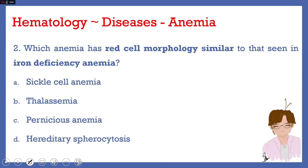Next question: which anemia has red cell morphology similar to that seen in iron deficiency anemia? A, sickle cell anemia. B, thalassemia. C, pernicious anemia. Or D, hereditary spherocytosis. The answer here is B, thalassemia.